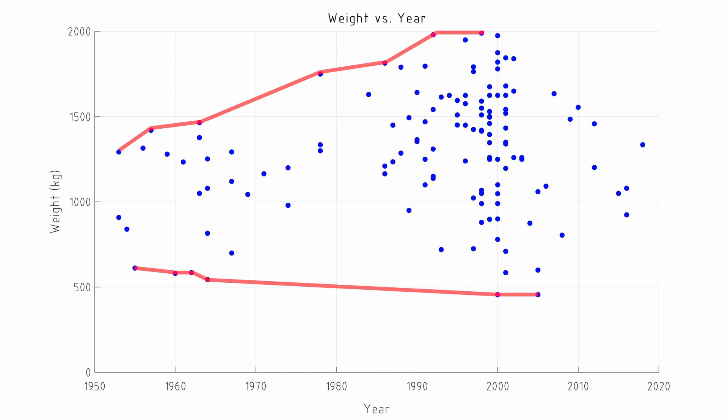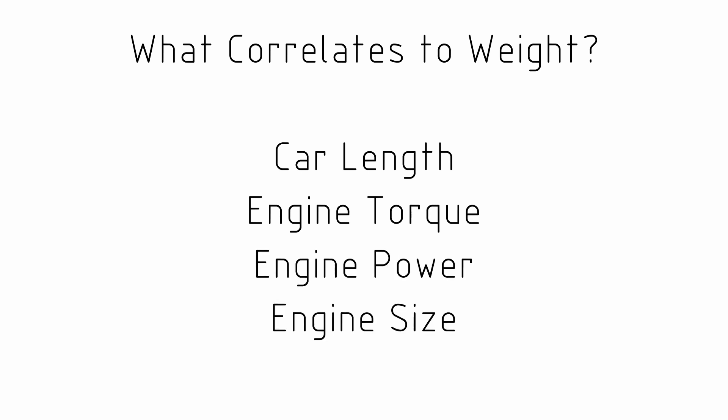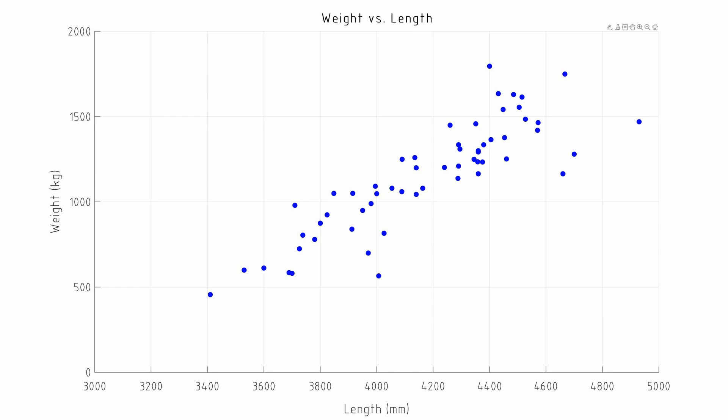The year a car is built is not a really good indicator of the weight of the vehicle. What we find if we go down the list of things correlated to weight is that the number one correlation is actually to the length of the car. Following that we see engine power and engine size — so the size and weight of the engine would be a good indicator of the weight of the vehicle. Then we see width. So the top correlations to weight really involve the dimensions of the car and the size and power of the engine, as clearly shown in the graph of weight versus length.